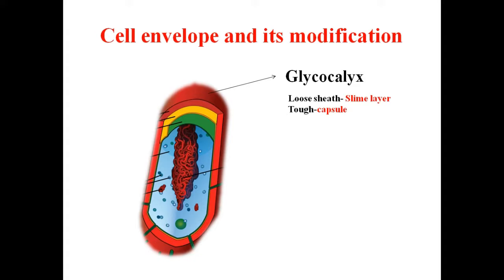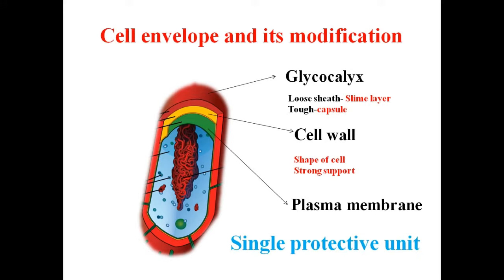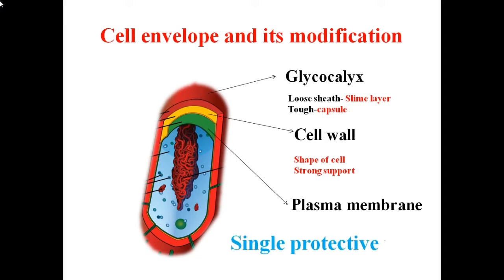The next layer is the cell wall, which determines the shape of the cell and provides strong structural support to prevent the bacterium from bursting or collapsing. The third layer is the plasma membrane, which is semi-permeable in nature and interacts with the outside wall. This membrane is structurally similar to that of eukaryotes. These three — glycocalyx, cell wall, and plasma membrane — act together as a single protective unit.